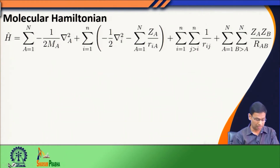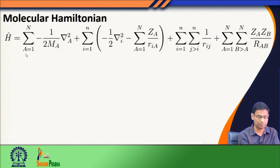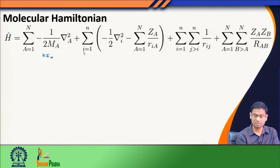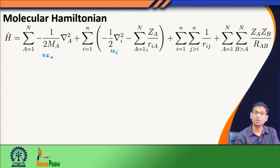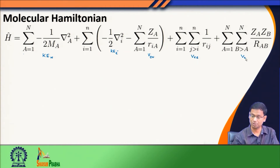Now we come back to the Hamiltonian that we have. The terms here are: the first term is the kinetic energy of the nucleus; these terms are the kinetic energy of electrons; this is the potential energy between electron and nucleus; this is the potential energy between electrons; and this is the potential energy between nucleus and nucleus.